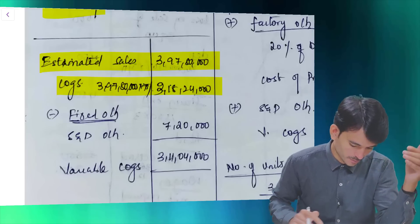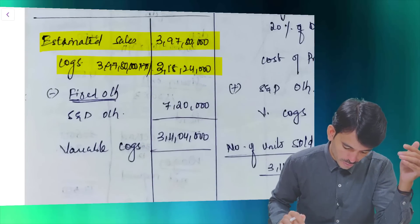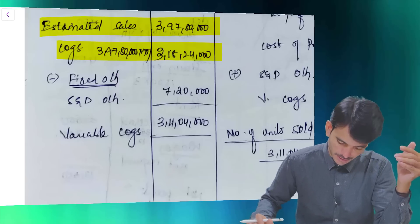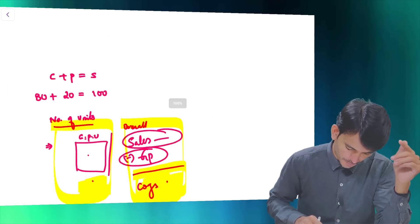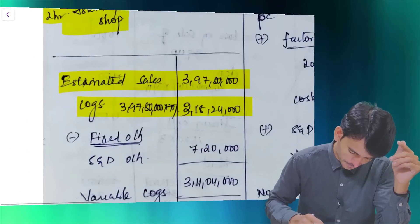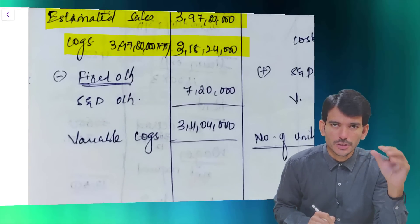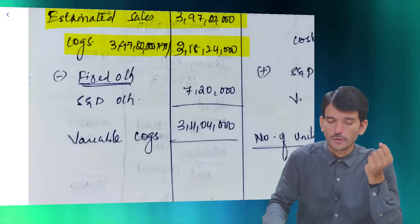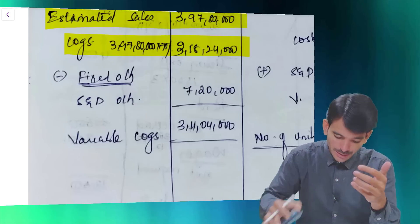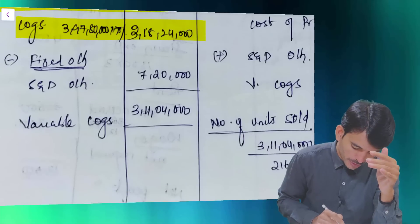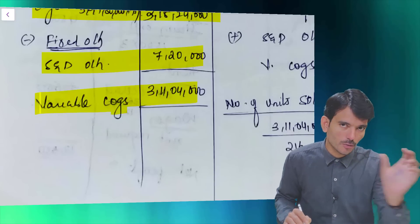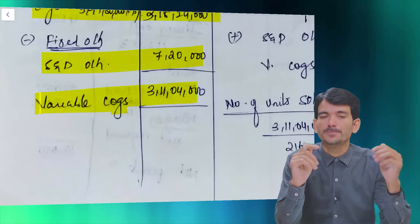From estimated sales, take out the cost of goods sold - that is sales multiplied by 80 divided by 100. When I say cost of goods sold, that includes fixed overheads also. Since we need the variable cost per unit, we need to remove the fixed portion. Fixed overheads are given as 7 lakh 20 thousand, so subtract that from the cost of goods sold to get the variable portion. That is one part of the answer - the numerator side.